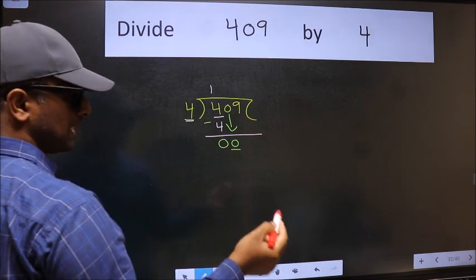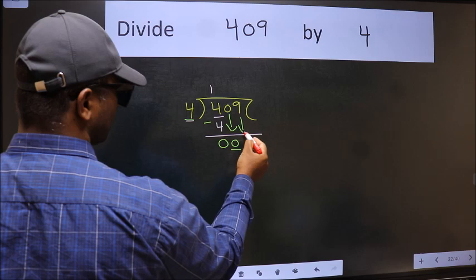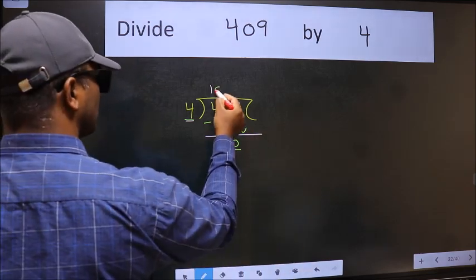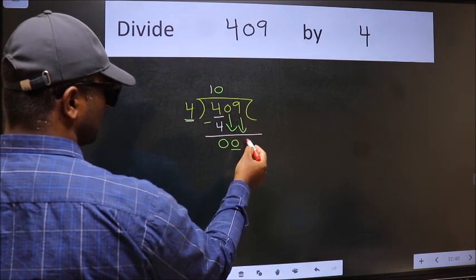So we should bring down the second number. And the rule to bring down second number is we should put 0 here. Then only we can bring this number down.